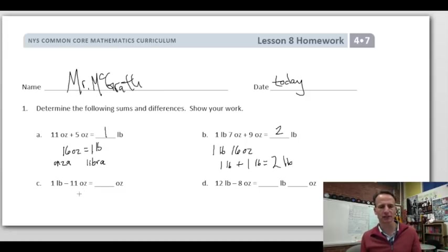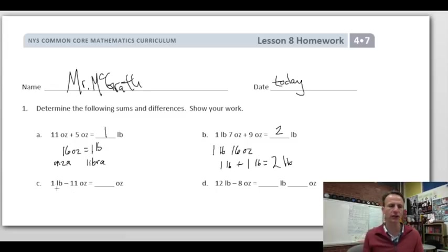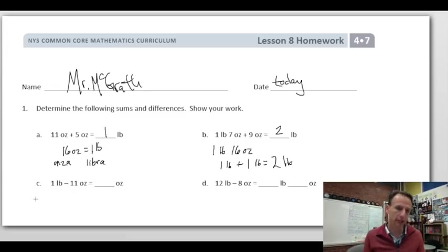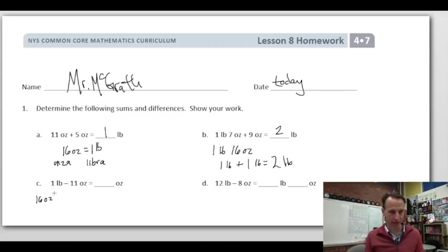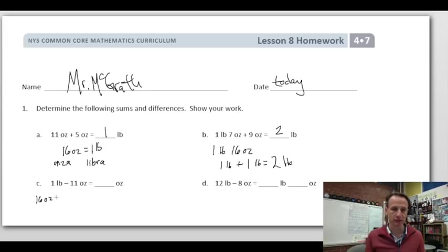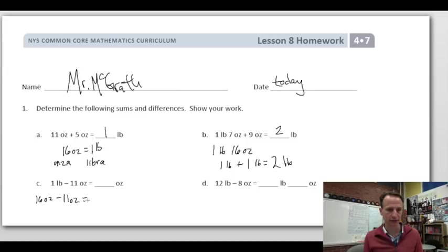Problem 1c: one pound minus 11 ounces. We can't directly subtract, so we decompose one pound as 16 ounces. Then 16 ounces minus 11 ounces leaves five ounces.